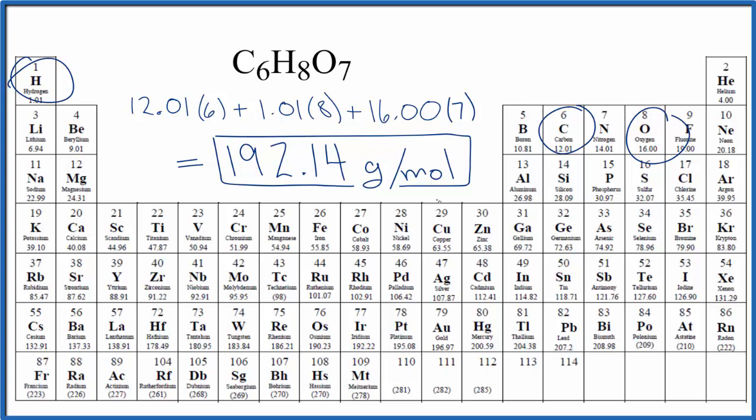That means if we had one mole of citric acid, it would weigh 192.14 grams. Or if we had 192.14 grams, that would be the equivalent of one mole of citric acid.